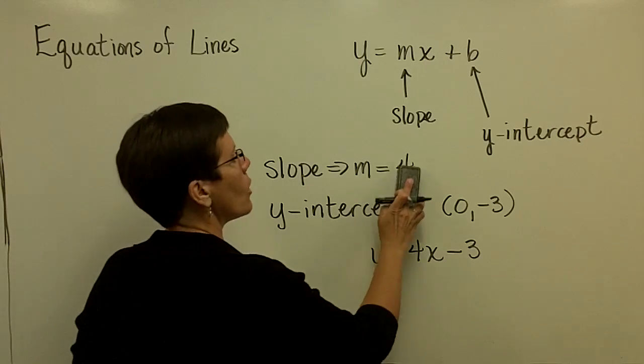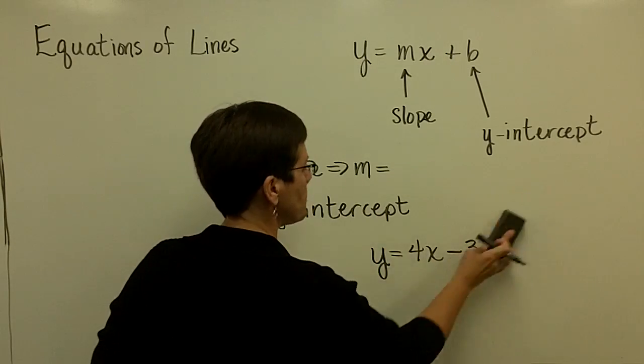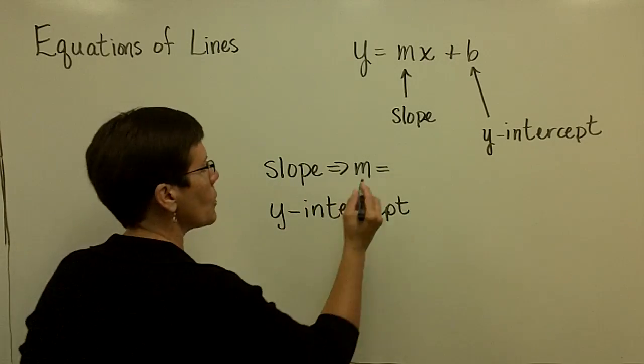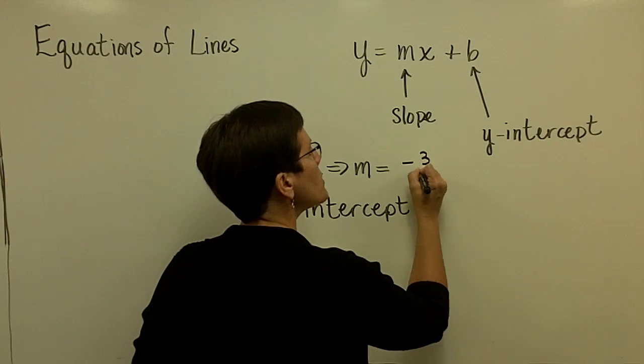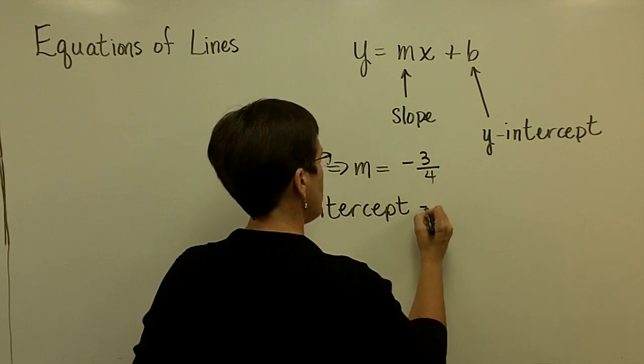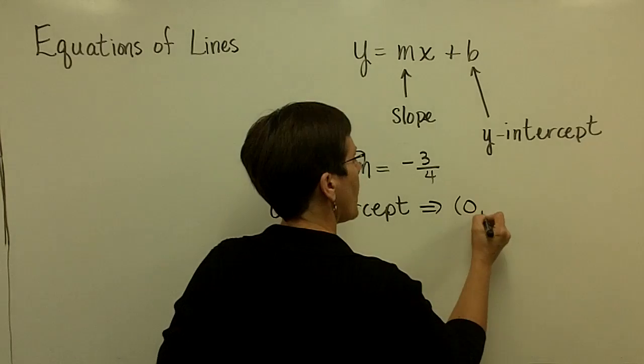If I said to you the slope was negative 3 fourths, and the y-intercept was 0 comma 2,